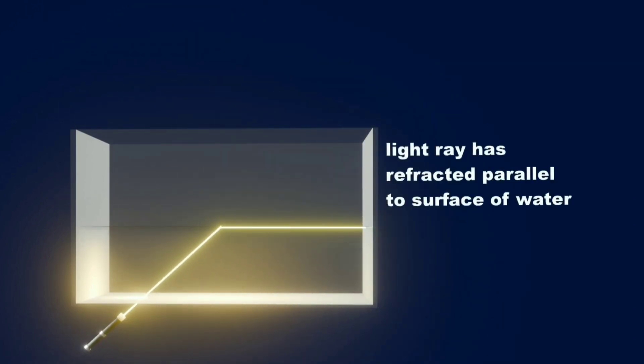a point comes when the light rays do not refract in the air medium. Instead, they refract along and parallel to the surface of water.